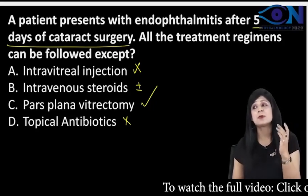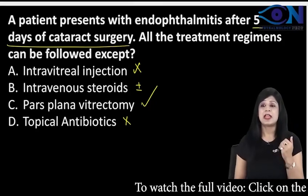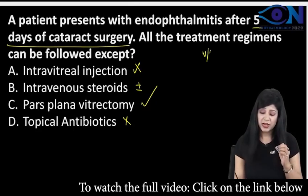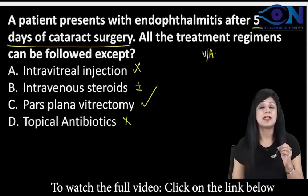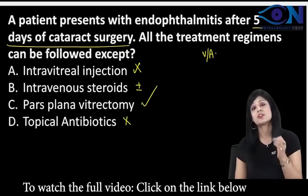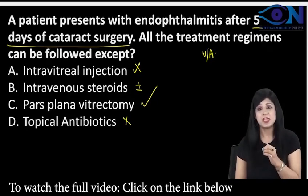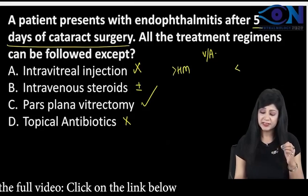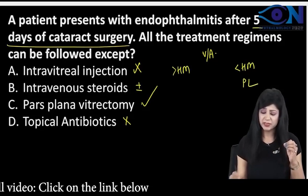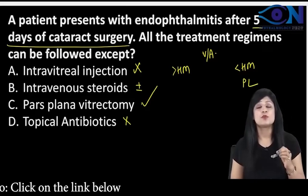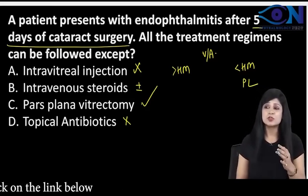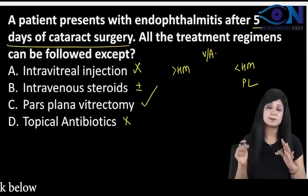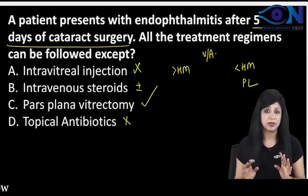Obviously, they have to be a little more clearer about the status of visual acuity. The treatment of endophthalmitis is actually based on visual acuity. Whether it is more than hand movement or less than hand movement — if it is only light perception, then we have to go for evisceration. In that case, we have to do evisceration and not vitrectomy. That is why it is best to choose pars plana vitrectomy as the answer.